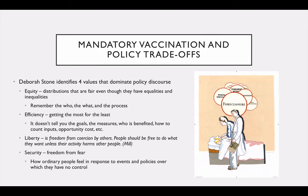Remember the who, the what, and the process when you're thinking about equity. Efficiency is getting the most for the least — we can all understand that. Anybody that's ever bought a car knows that you try to get the most for the least amount of money; we frequently deceive ourselves in thinking we succeeded. Efficiency doesn't tell you the goals, the measures, who has benefited, how to count the inputs, the opportunity cost, and so forth. So efficiency is about getting the most for the least, but there's a lot of things that efficiency in itself doesn't tell you.